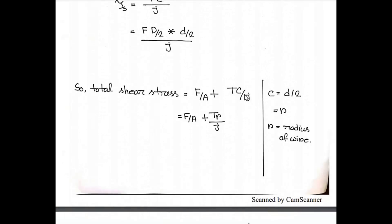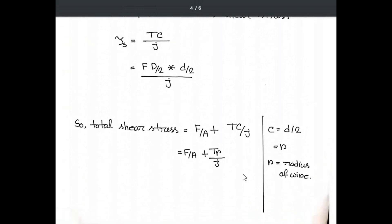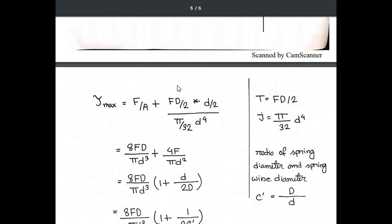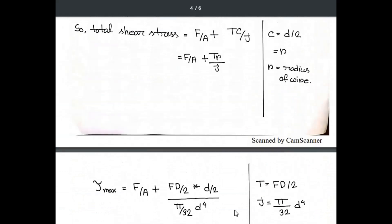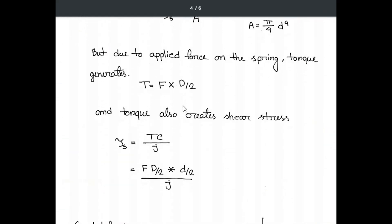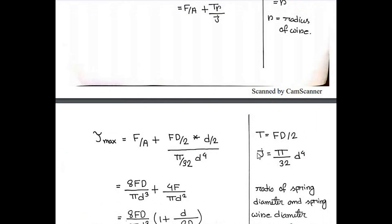Let's make the summation. Tau max - we're putting T equals FD by 2 and J equals pi by 32 times small d to the power 4. This is the experimental value of spring.